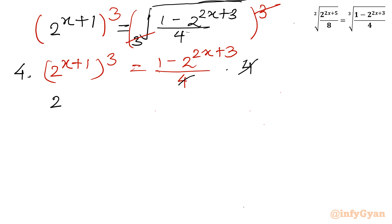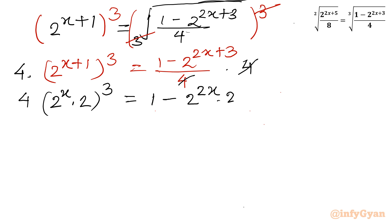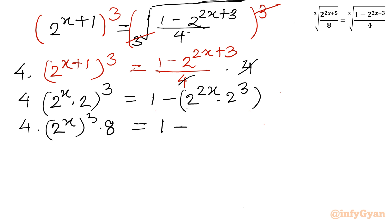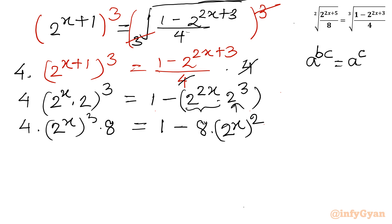Using the exponent property on the left, 2^(x+1) whole cube becomes (2^x · 2)³ = 4 · (2^x)³ · 2³, and 2³ = 8. On the right-hand side, using the same property, 2^(2x+3) becomes 2^(2x) · 2³ = 8 · (2^x)², since 2^(2x) = (2^x)². So we have 4 · 8 · (2^x)³ equal to 4 minus 8 · (2^x)².